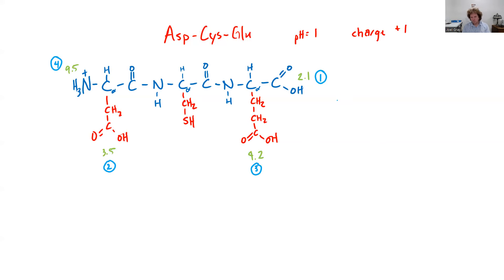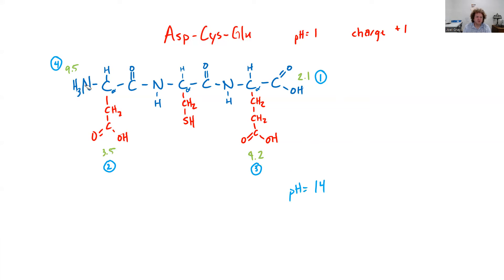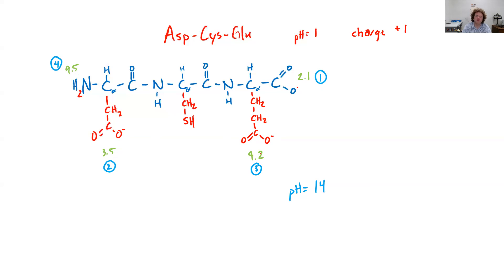With that in mind, what would this molecule look like at a pH of 14 — the most basic I could possibly make this molecule? The first thing I want to do is remove all the protons that can be removed. So here I've got all of my groups deprotonated. My N-terminal becomes NH2. The first group deprotonated was my C-terminus, followed by my R group for aspartic acid, my R group for glutamic acid, and then ending at my N-terminal of aspartic acid.